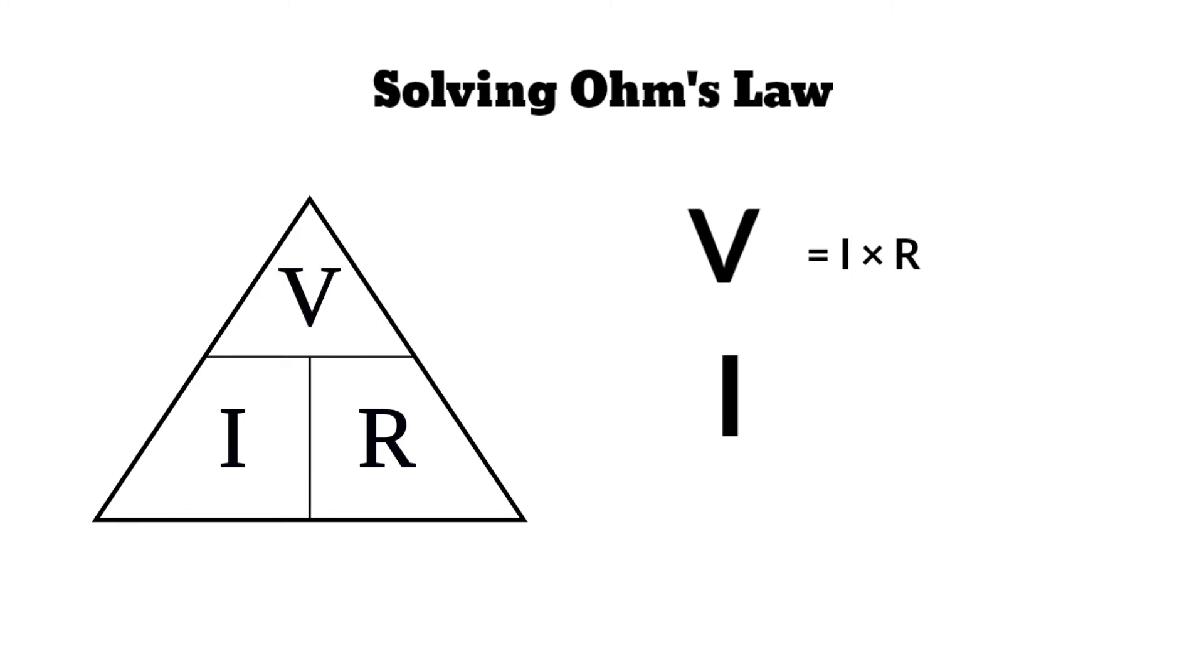To find the I or current, cover the I or current on the triangle, leaving V or voltage divided by R or resistance equals I or current.